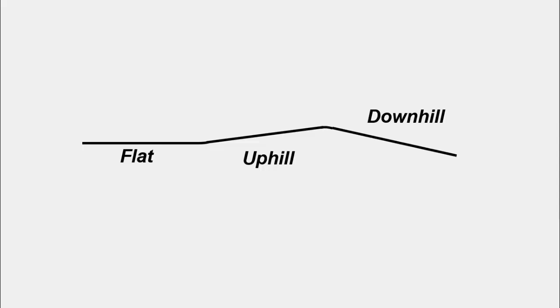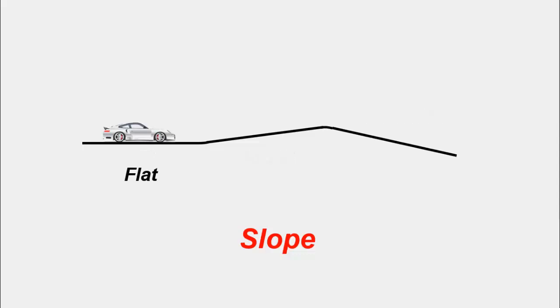So for a realistic road, you'll have a random combination of these three cases. To describe these ups and downs mathematically, you can use the concept of slope. Slope of the flat region, slope of the uphill region, and slope of the downhill region. So let's work that out.